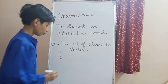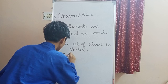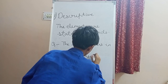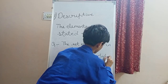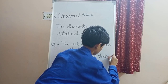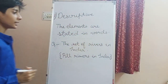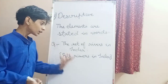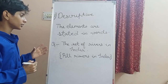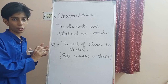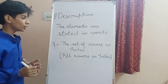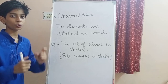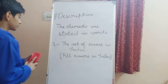We write it in words like this: 'all rivers in India', because we don't know which specific river they are talking about. So the descriptive method means elements are described in words. I hope you are clear with the descriptive method. Let's move to the second method, which is the roster or tabular method.